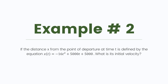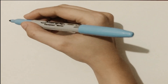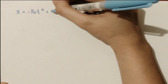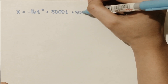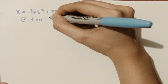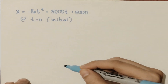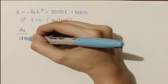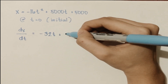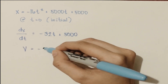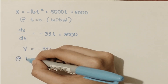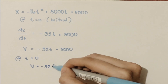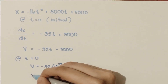Example number 2: if the distance x from the point of departure at time t is defined by the equation x of t is equal to negative 16t squared plus 5,000t plus 5,000, what is its initial velocity? We need to differentiate the equation so that we will have the velocity function, which is equal to negative 32t plus 5,000. Substituting t equal to 0, we will have negative 32 times 0 plus 5,000, which is equal to 5,000.